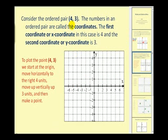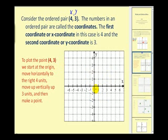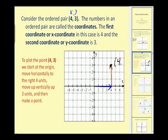Let's consider the ordered pair (4, 3). The first coordinate is the x-coordinate, and the second coordinate is the y-coordinate. So to plot the point (4, 3) on the coordinate plane, we start at the origin and we move horizontally to the right 4 units, since the x-coordinate is positive 4. Then we move vertically up 3 units, because the y-coordinate is positive 3, and then we make a point. This is the point (4, 3).